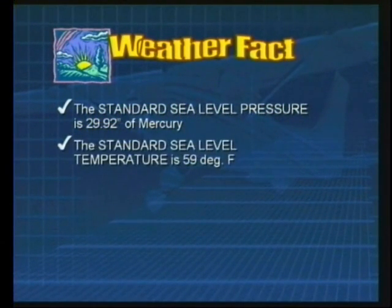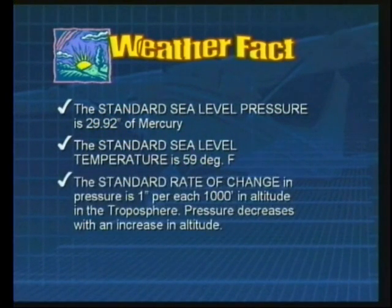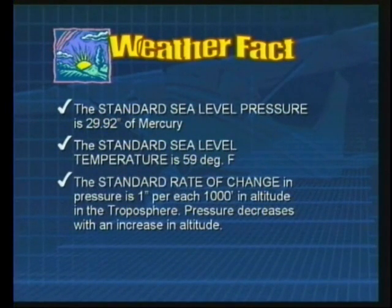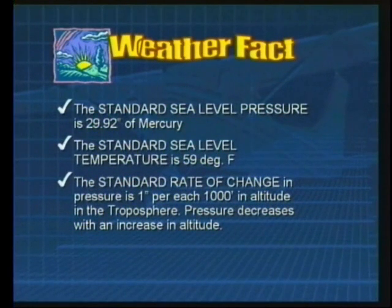The standard sea level temperature is 59 degrees Fahrenheit or 15 degrees Celsius. The standard rate of change in pressure is about one inch of mercury per thousand foot gain in altitude in the troposphere. Pressure decreases as you increase in altitude — simply stated, the further you go up, the more the barometer drops.